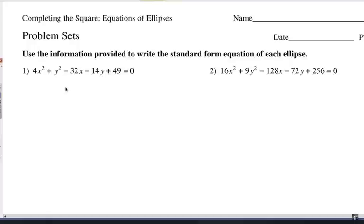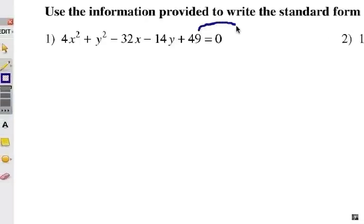Number one, you find the constant and move that over to the right. You only want to start with the x's and y terms on the left. So to move that to the right, I'm going to subtract 49 from each side. It'll be negative 49 on the right, and now it's gone from the left side.